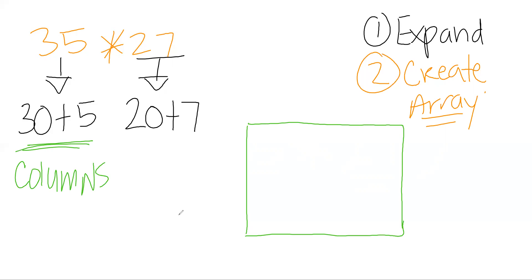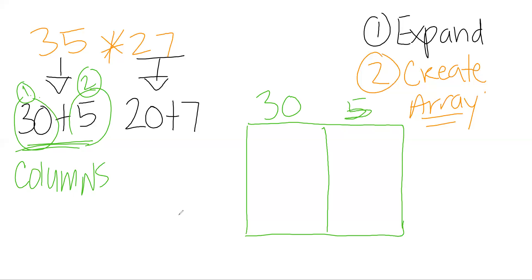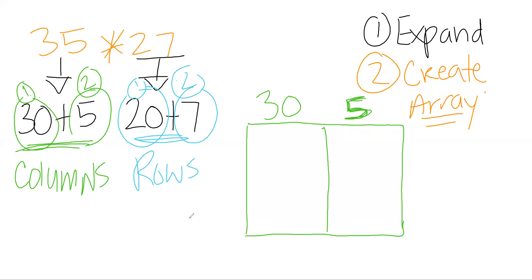After expanding, I look at how many numbers I have — not what the numbers are, but how many. I have two numbers, so I'm going to have two columns. One column is named 30 and the other is named 5. Then the second number gives us our rows. After expanding, I have two numbers, so I'll have two rows: one row called 20 and the other called 7.